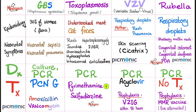Varicella zoster virus — part of the O, others. Acquired by respiratory droplets; can lead to rash and pneumonia in the mother, and skin disease in the baby. Diagnosed with PCR; treat with acyclovir; prevention: varicella zoster immunoglobulin.